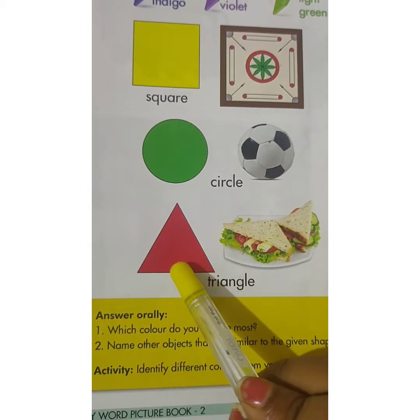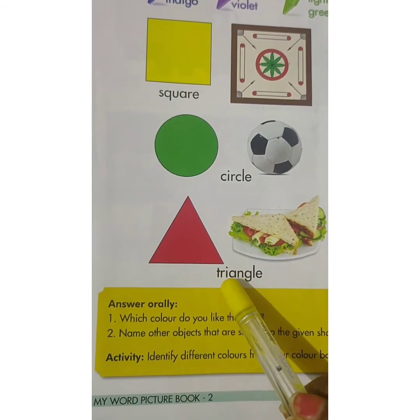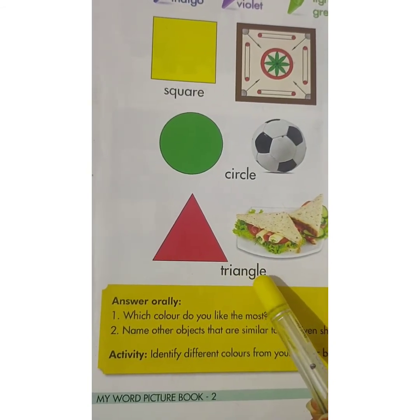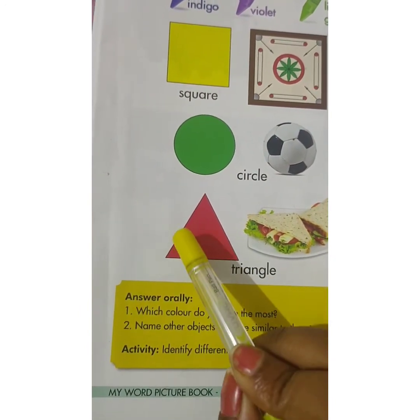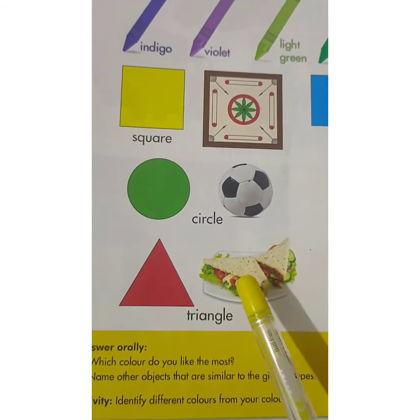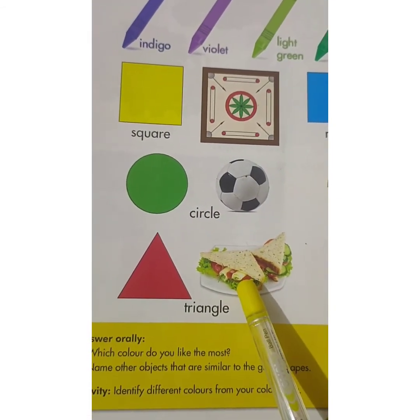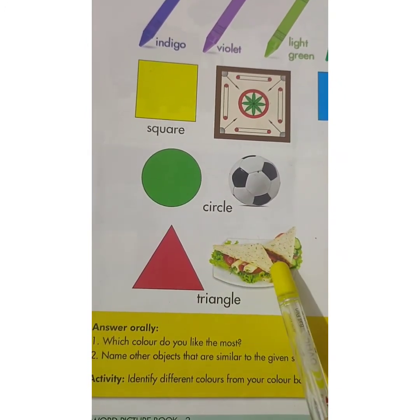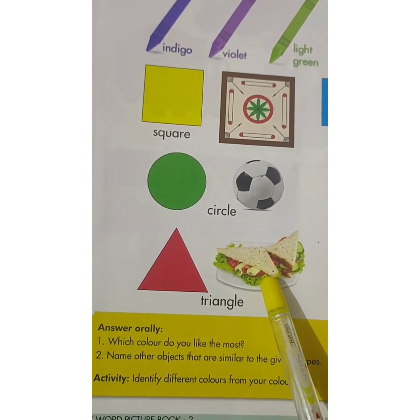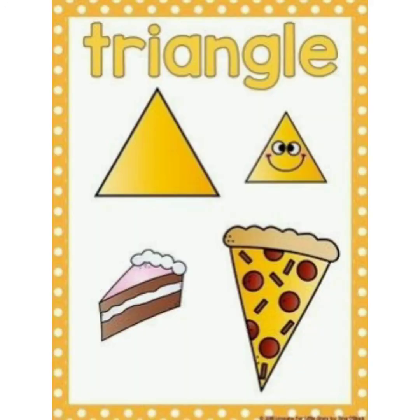This is an umbrella and the shape of this umbrella is also semicircle. This is triangle. T-R-I-A-N-G-L-E. Triangle. It has three sides: one, two, three. And you see children, this is a sandwich — you all know what this is — and the shape of a sandwich is also triangle. And these are some more triangle shape objects.